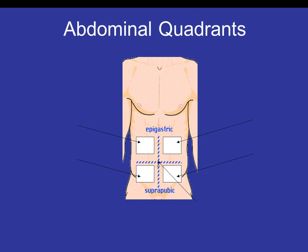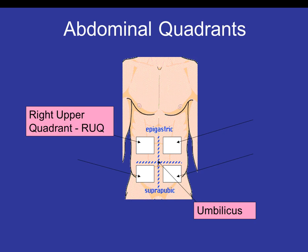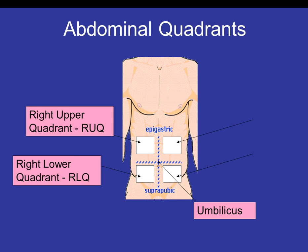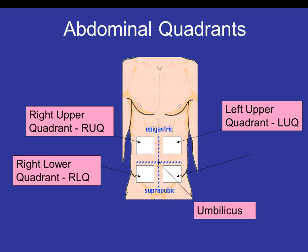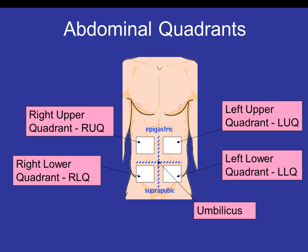Abdominal quadrants — make sure you keep your quadrants and cavities separate. The umbilicus, our belly button, is right in the middle. We have the right upper quadrant (RUQ), right lower quadrant (RLQ), left upper quadrant (LUQ), and lower left quadrant (LLQ).